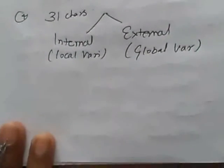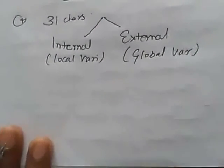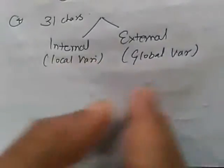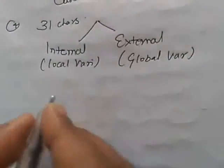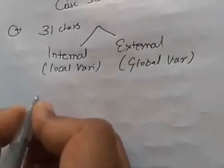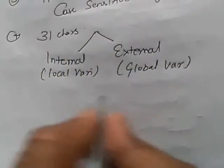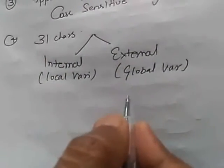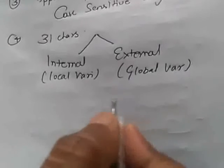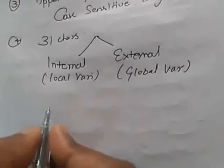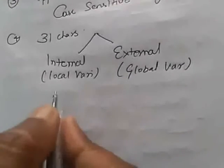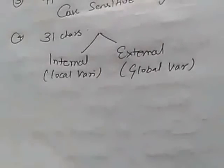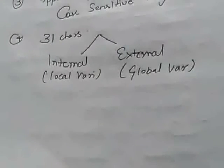Some differences between the keywords and the identifiers are: keyword is a predefined word and identifier is a user defined word. Its meaning is predefined in the C compiler. But, in case of identifier, its meaning is not defined.